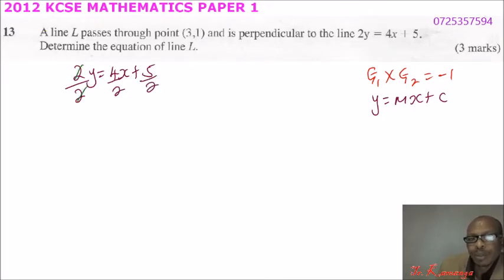So this means that this 2, we will divide by that, this will divide by that, this is 2. So we have y equals 2x plus 5 over 2. So we know the gradient of this line is equals to 2.